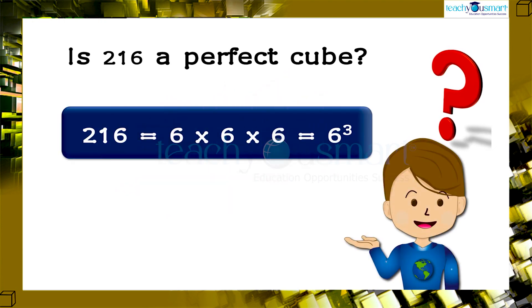Yes, 216 can be written as 6 multiplied by 6 multiplied by 6 equals 6 raised to 3. So, it's a perfect cube.